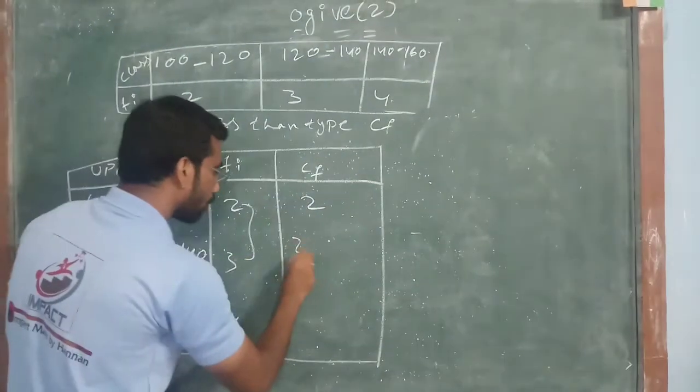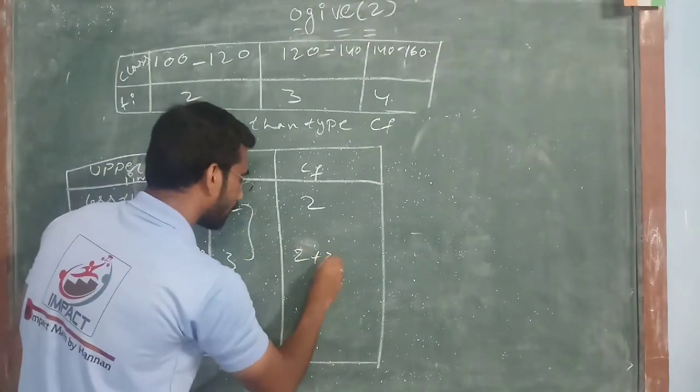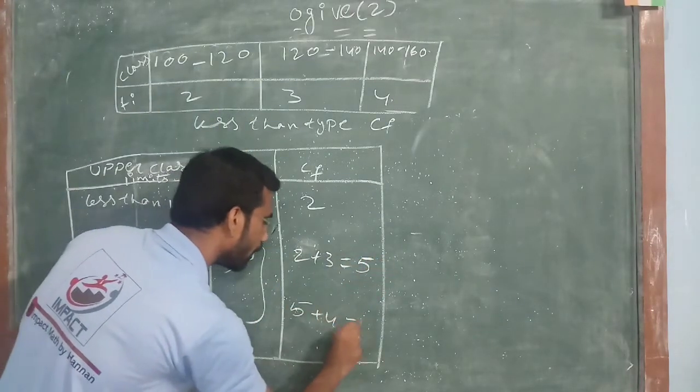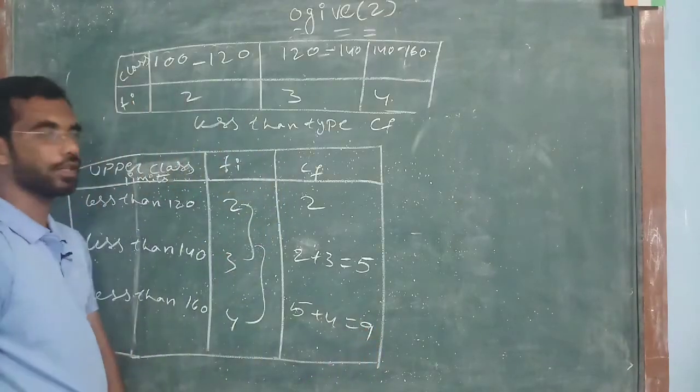Next, 2 plus 3 is equal to 5. Next, 5 plus 4 is equal to 9.